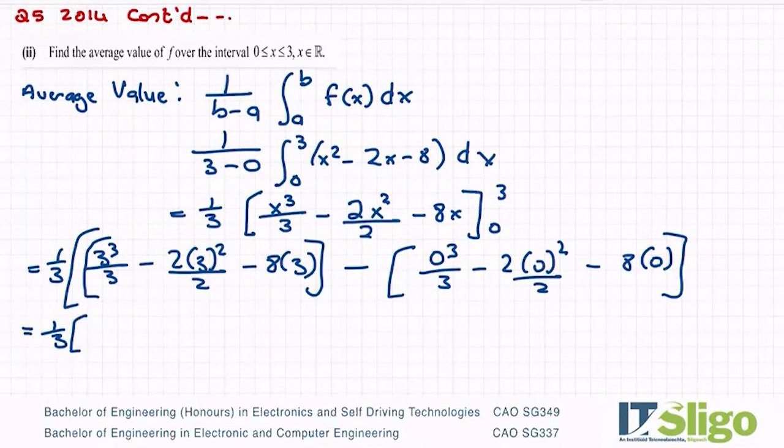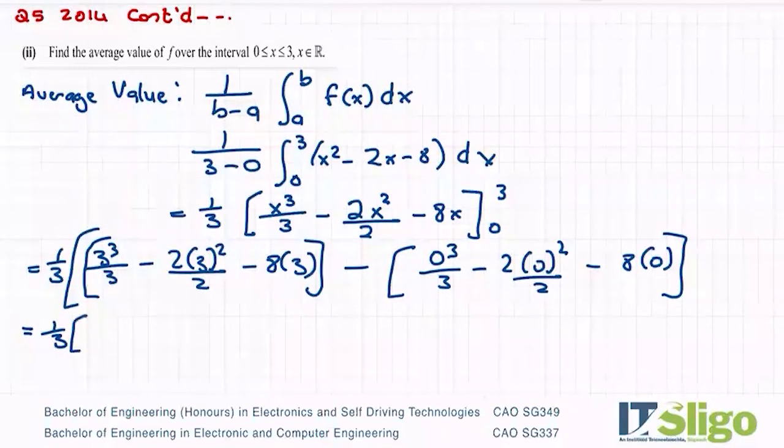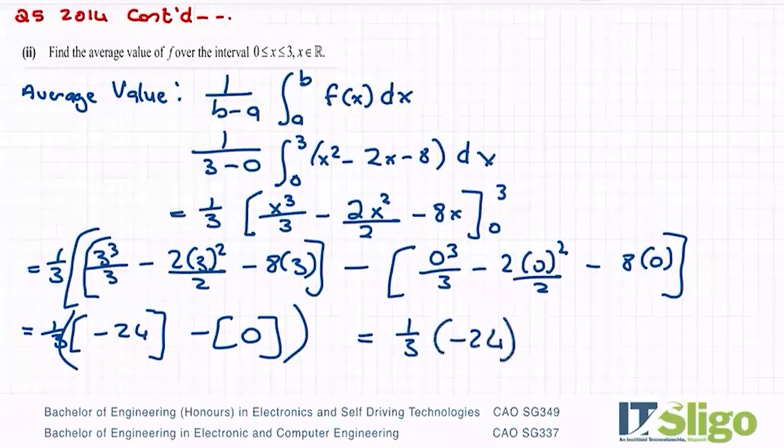But I do know more with it. It's minus 0. So it's a third of we put this bit into a calculator. So 3 cubed over 3 minus 2 bracket 3 squared over 2 minus 8 times 3. So I am getting minus 24 for him minus 0. So it's equal to a third of minus 24. So it's equal to minus 8. So it's an average value of F over the interval 0 is less than or equal to x is less than or equal to 3.